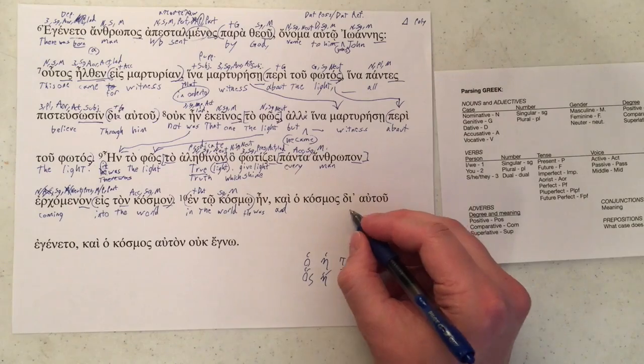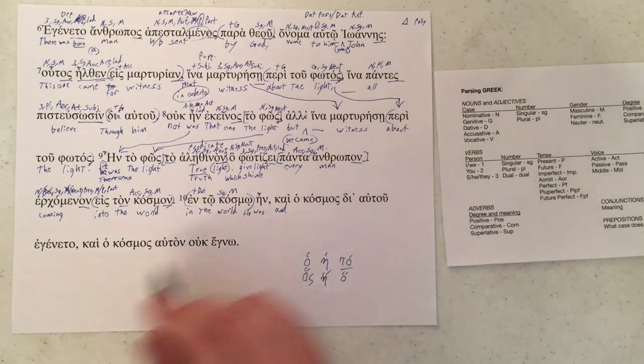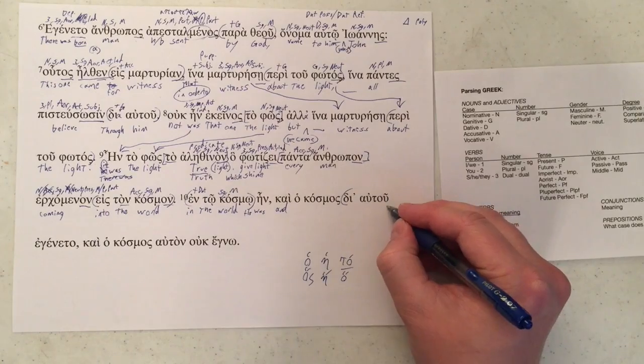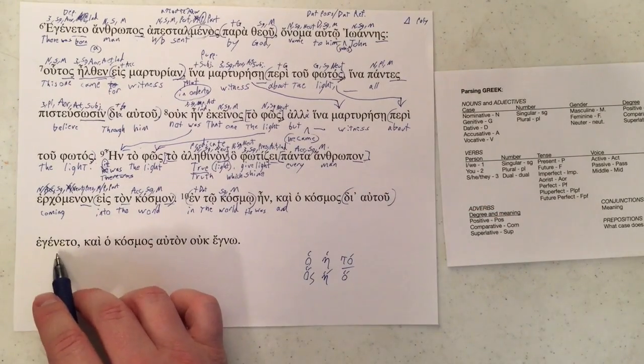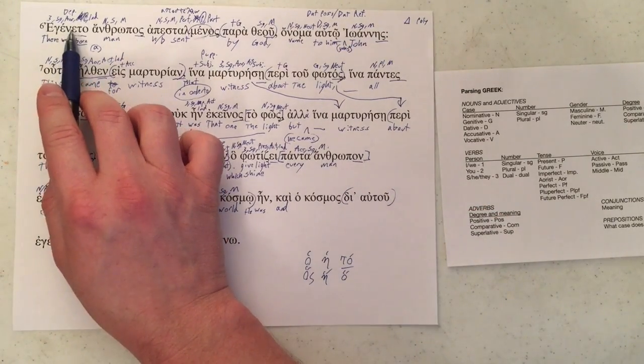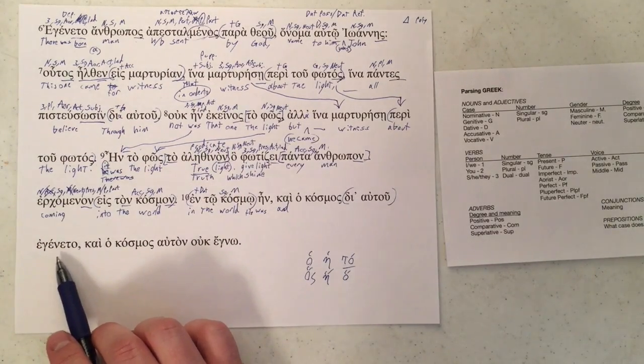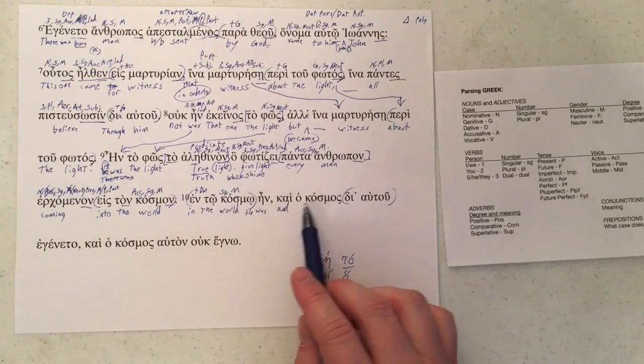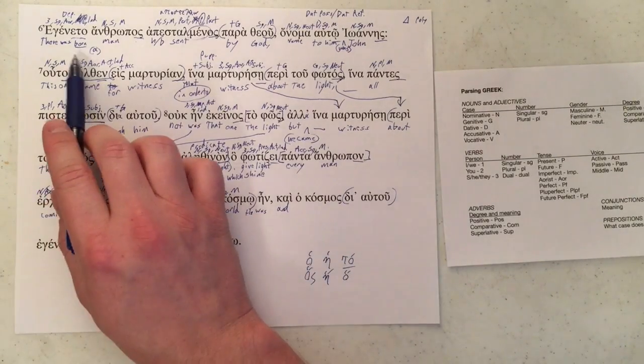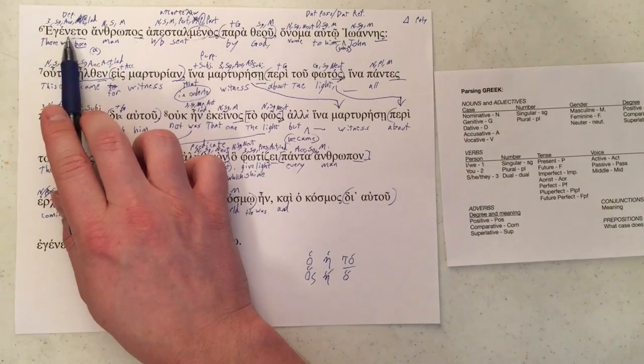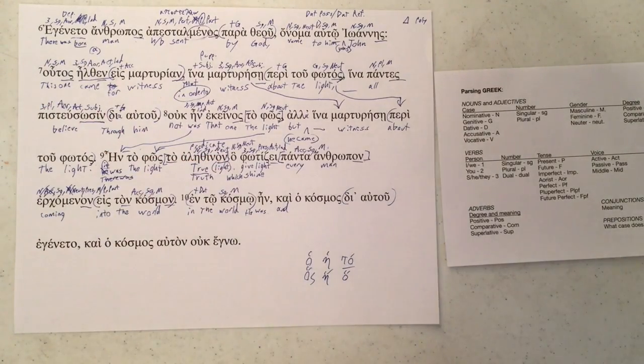Ho kosmos, don't have a verb yet so we're not going to do that, but we can mark off this prepositional phrase. Ah, we've got egeneto again. We've already parsed egeneto up here. However, since we've got a different subject for egeneto here, we've got ho kosmos which we'll get to in a moment. Born, our use in verse six, is probably not going to work very well.